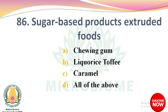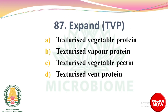Next question: sugar-based extruded foods options: chewing gum, licorice, toffee, caramel, all of the above. The right answer is Option D: all of the above. Next question: expand TVP. Options: Texturized Vegetable Protein, Texturized Vapor Protein, Texturized Vegetable Pectin, Texturized Wind Protein. The right answer is Option A: Texturized Vegetable Protein.